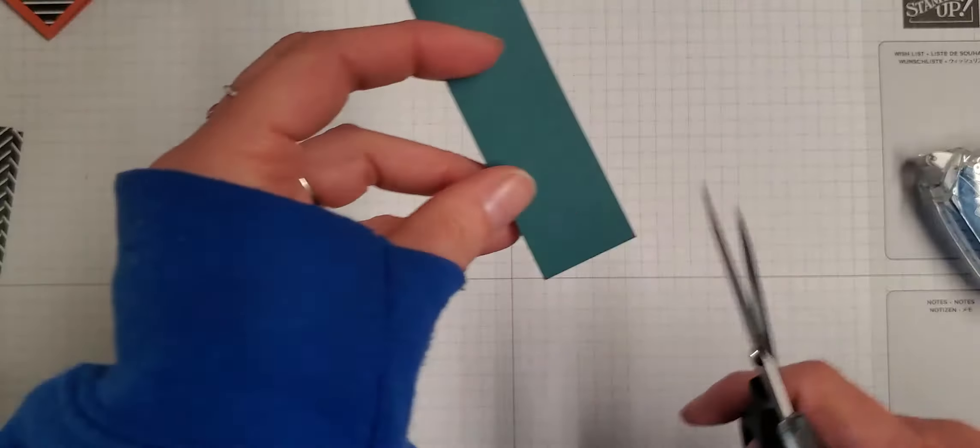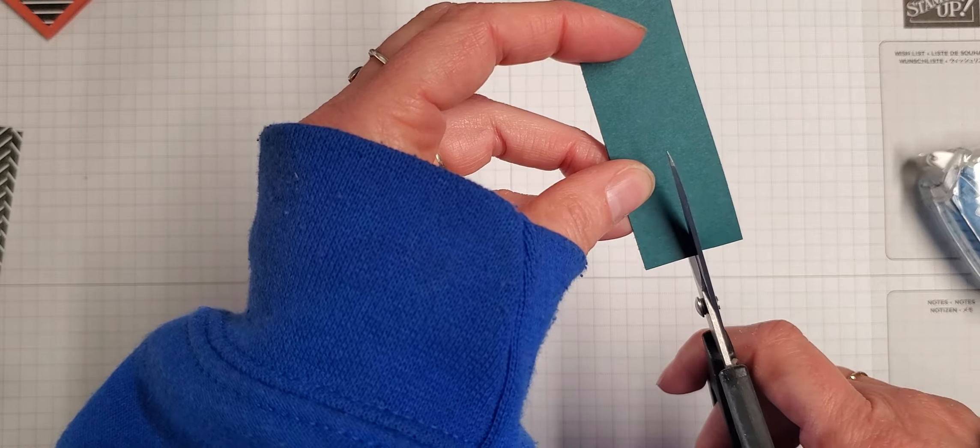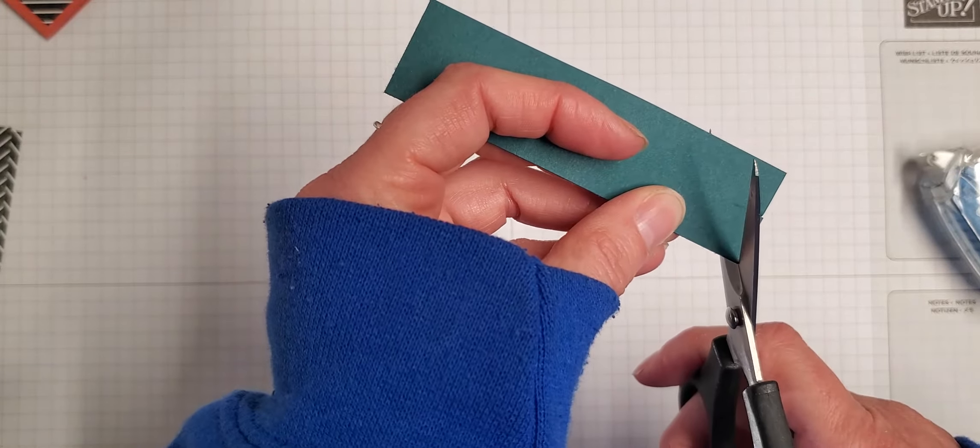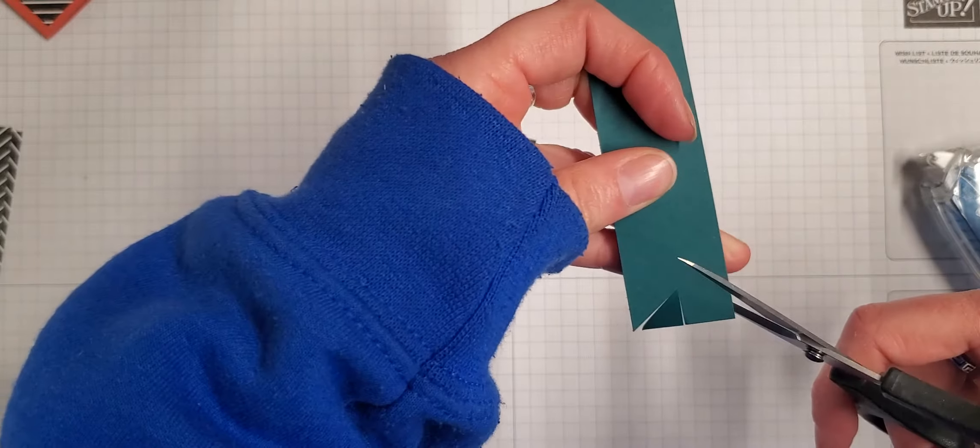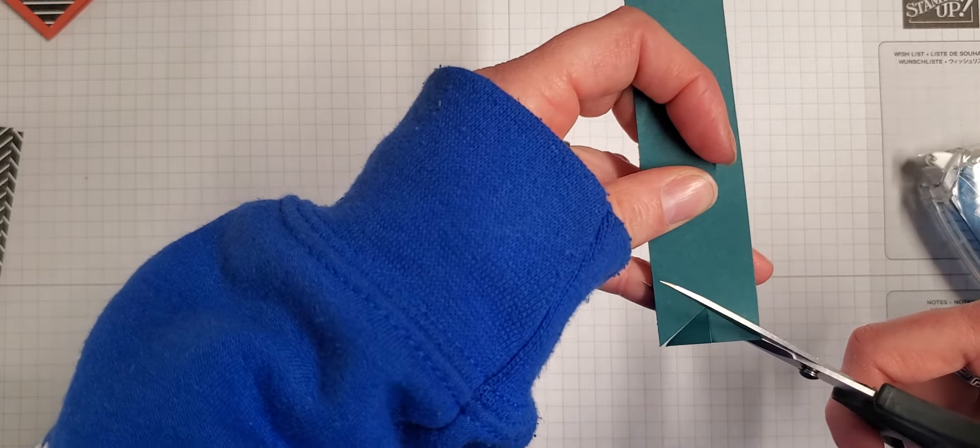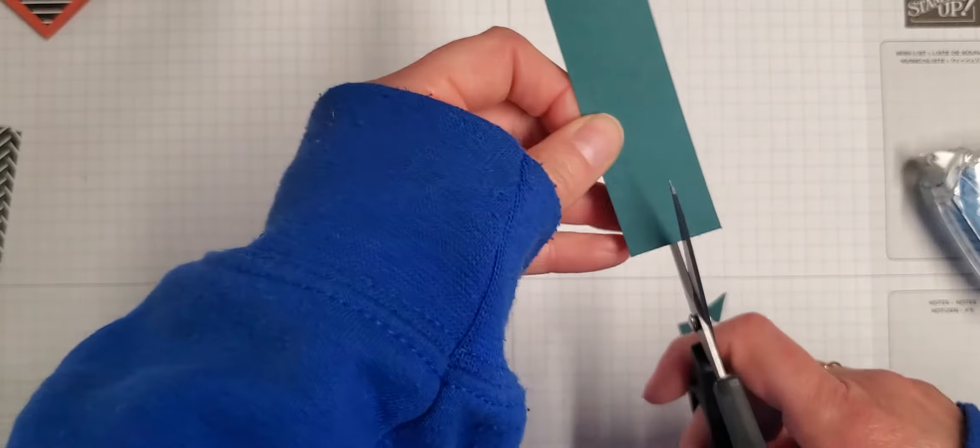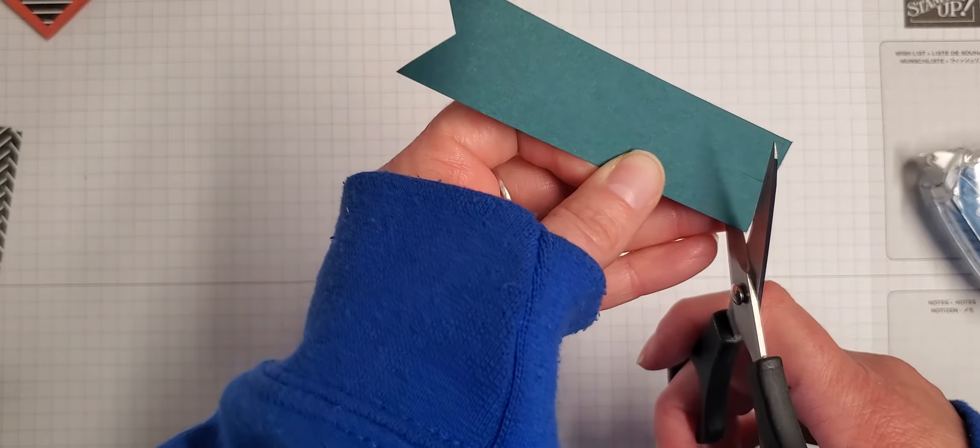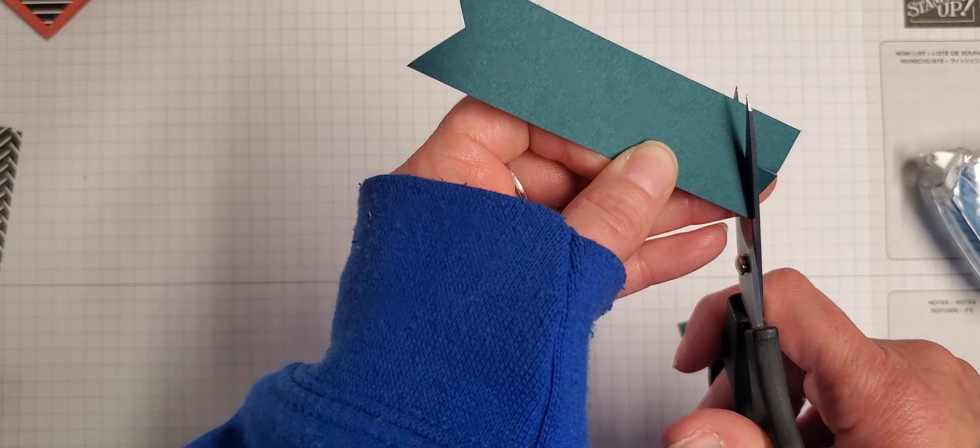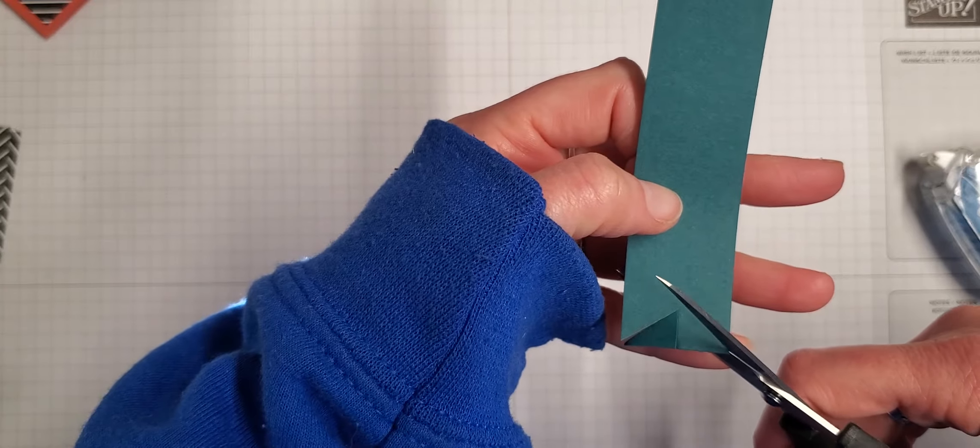Let's cut all of the banners at once. Batch working is good and then I can show you all the colors together when we're finished. So this is Pretty Peacock, this is another one of my favorites and I'm going to miss this one a lot.